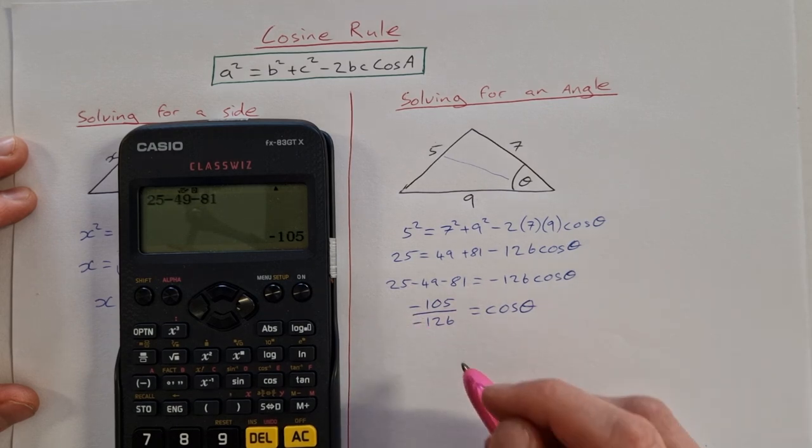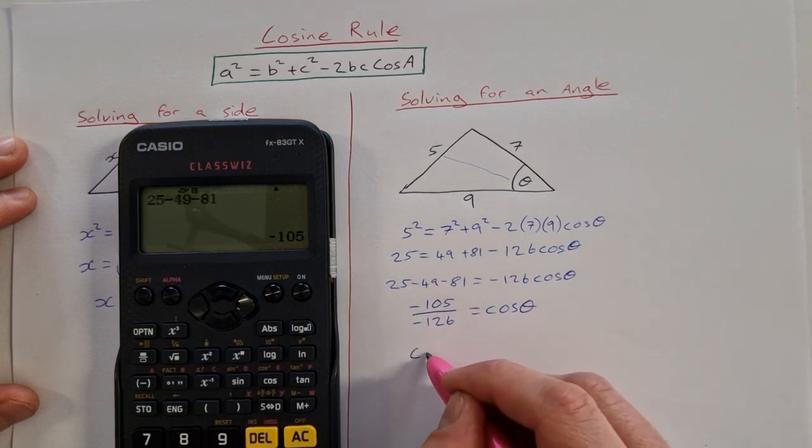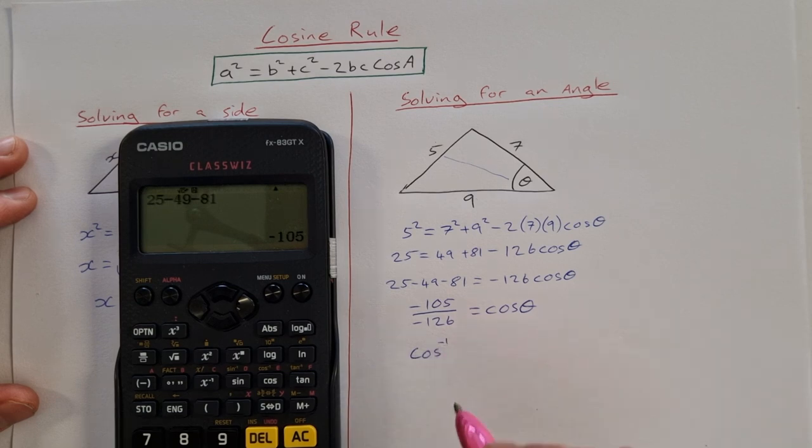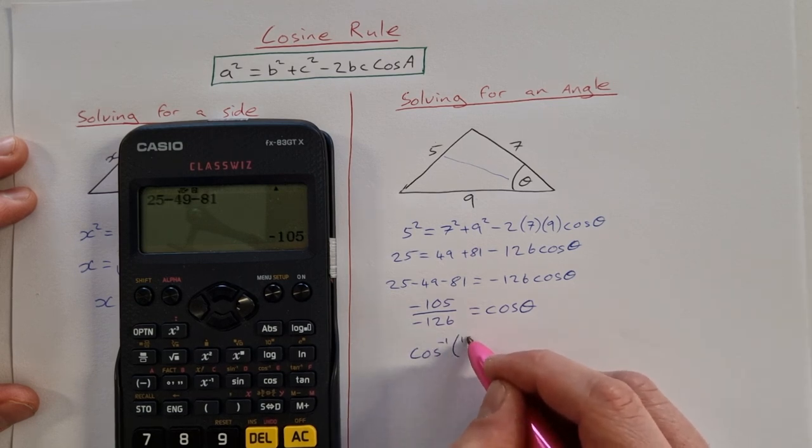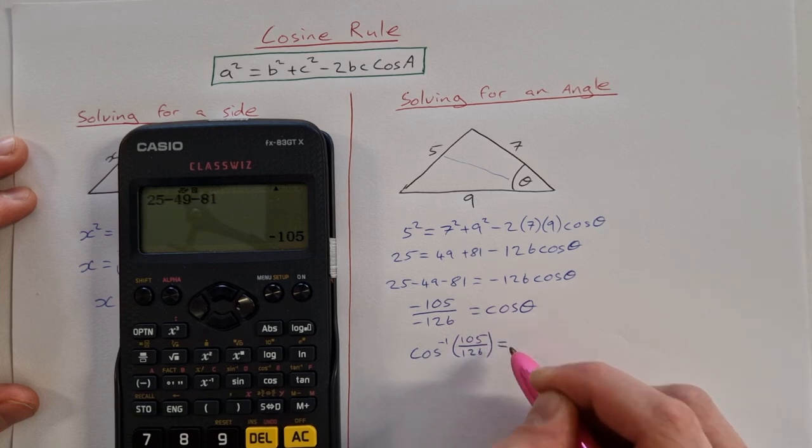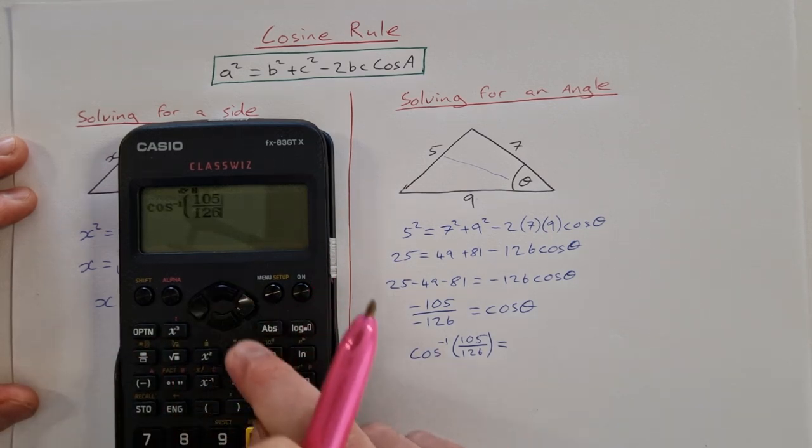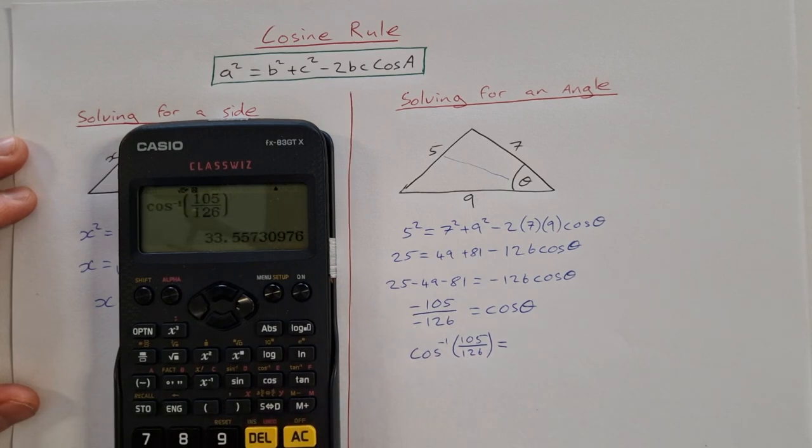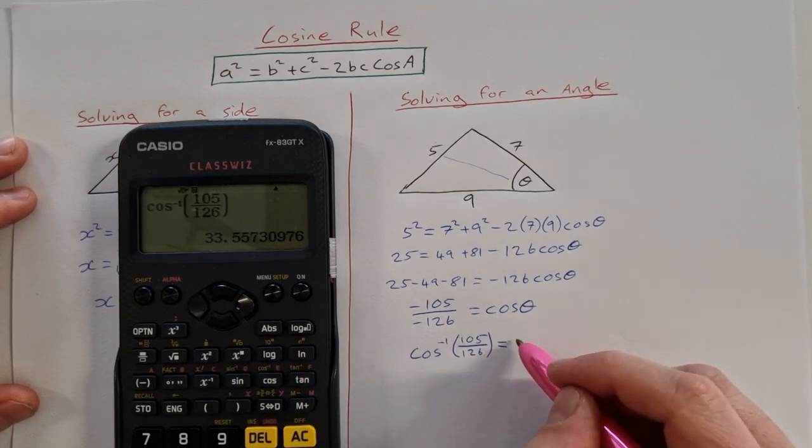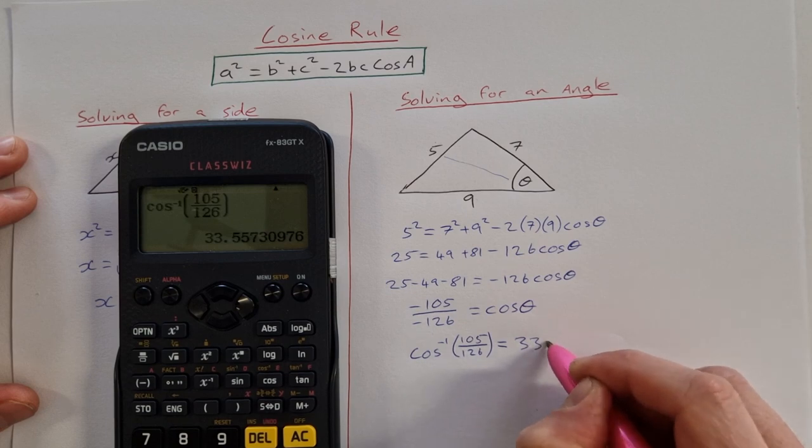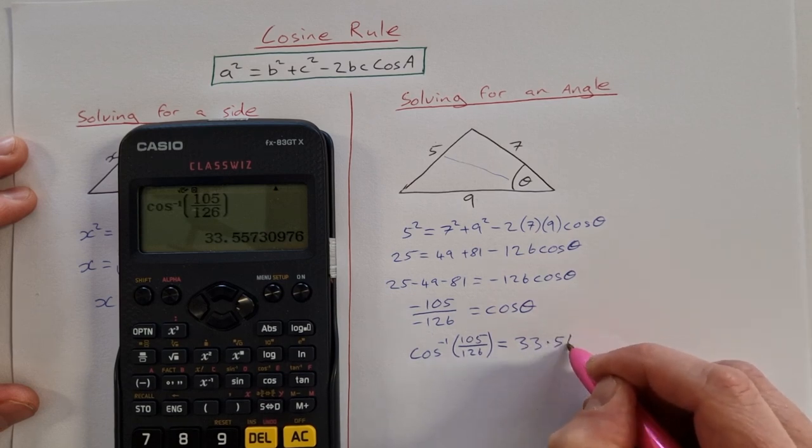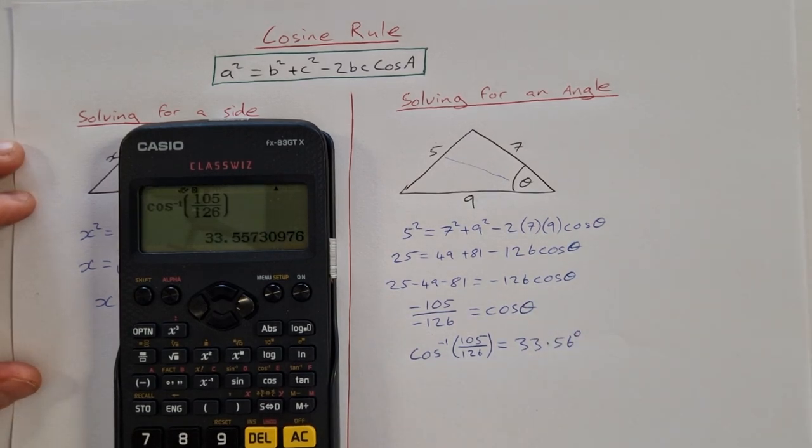Minus divided by minus is a plus. So to find theta I'm going to find the cos inverse or inverse cos of 105 over 126. So into the calculator, shift cos 105 over 126, close the brackets, equals 33.557. So that's 33.56 degrees correct to two decimal places.